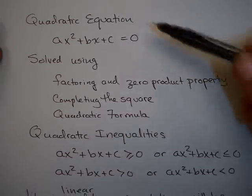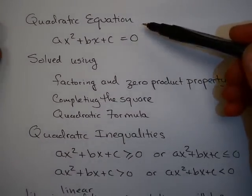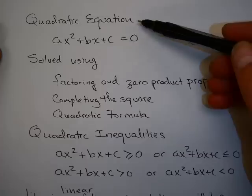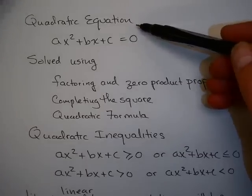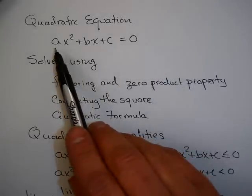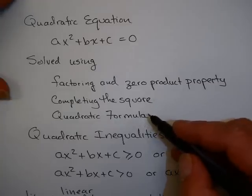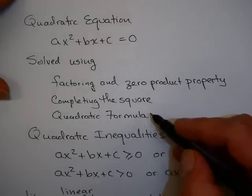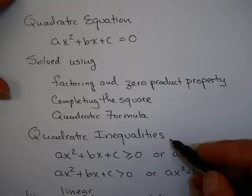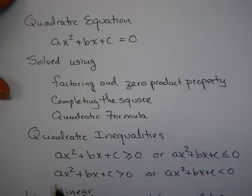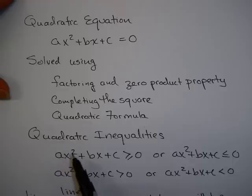So let's review a few ideas. Quadratic equations - we've learned and spent a lot of time with quadratic equations. Quadratic equations are equations of the form ax² + bx + c = 0, where a, b, and c are real numbers. These we've solved using factoring and the zero product property, completing the square, and the quadratic formula.